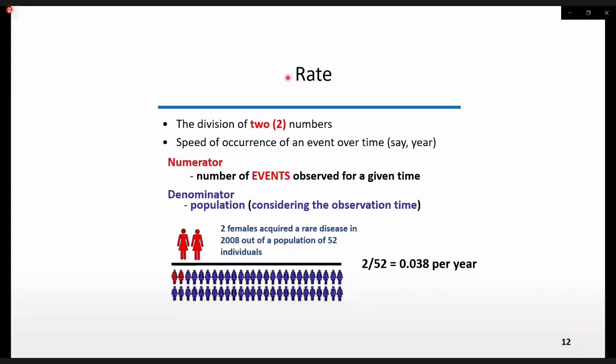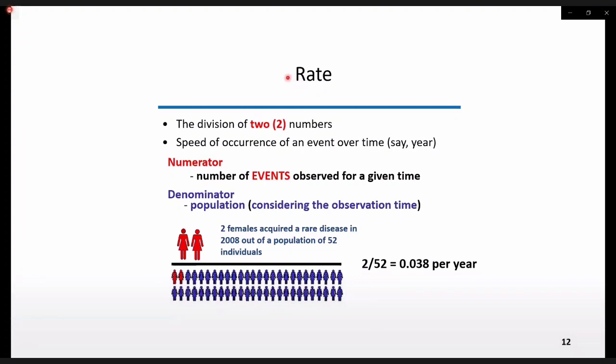Rate is also a quotient of two numbers and a special kind of ratio. However, it measures the speed of occurrence of an event over time. It includes the time and the population where events are observed. The illustration shows that two female individuals acquired a rare disease in the year 2008 out of a population of 52 individuals. The rate, therefore, is 0.038 per year.